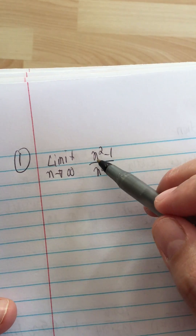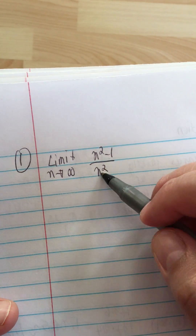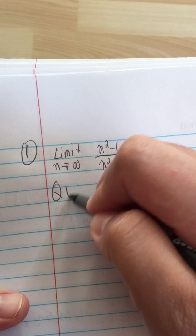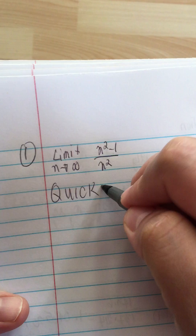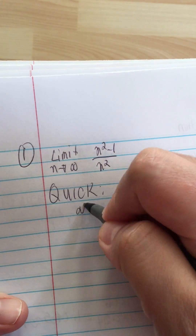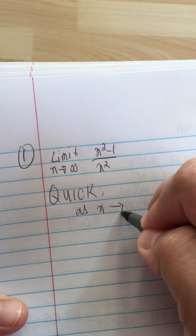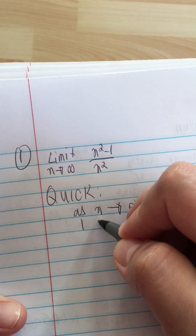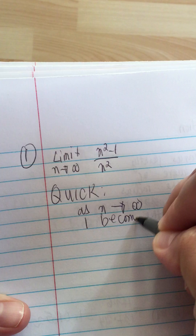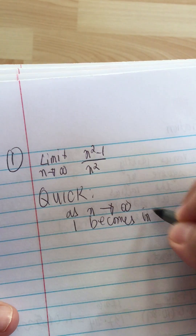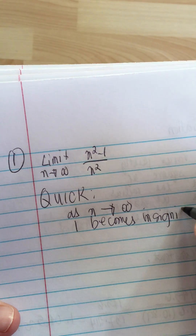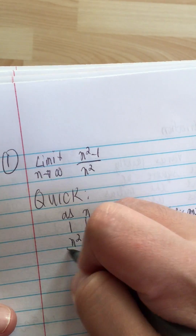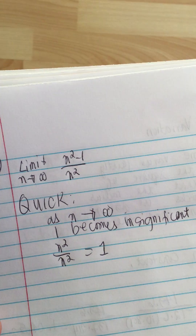We have a limit problem here: (n² - 1) / n², as n goes to infinity. The quick way is that as n goes to infinity, the 1 becomes insignificant. So we have n² over n², which is equal to 1.